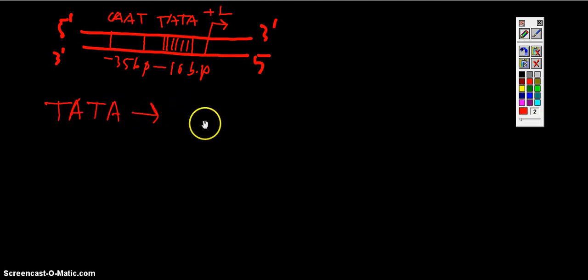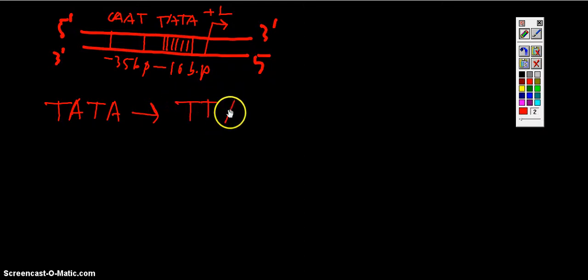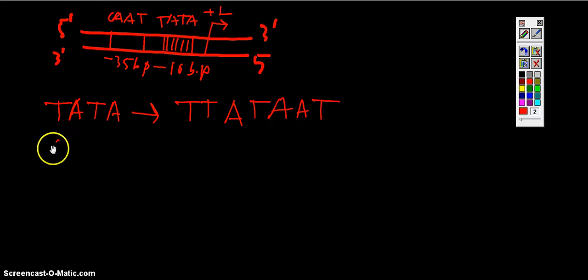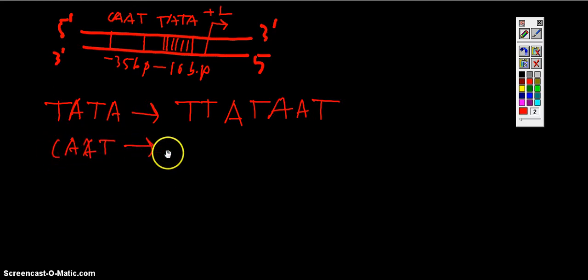For the TATA box sequence, the sequence is T, T, A, T, A, A, T — and for the CAT sequence it is similarly an AT-rich consensus sequence.